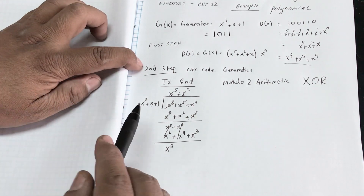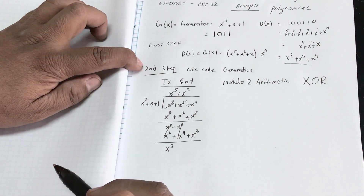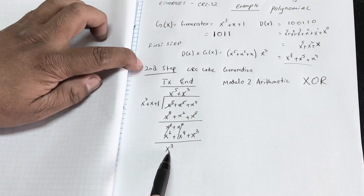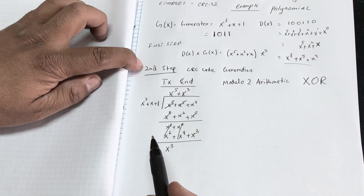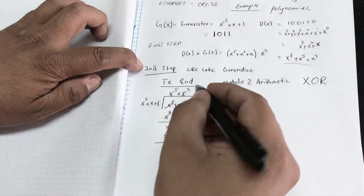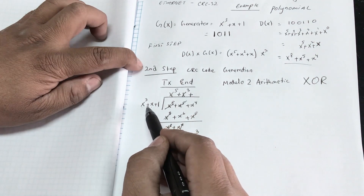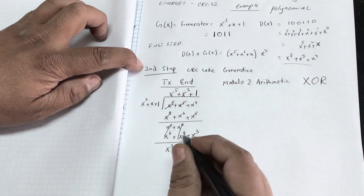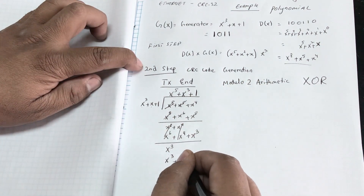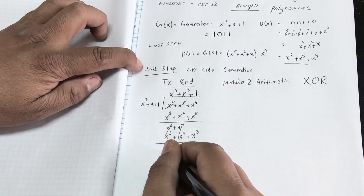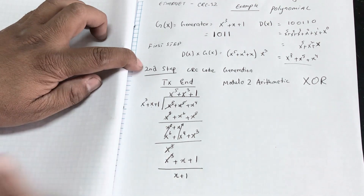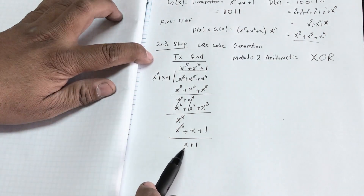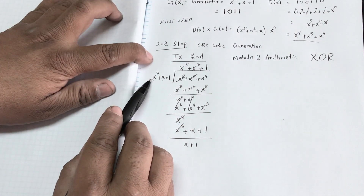We continue long division until the remainder has a degree smaller than the generator's degree (x³). To eliminate x³, multiply the generator by 1: x³ + x + 1. XOR-ing x³ with x³ + x + 1 cancels the x³ terms, and we stop. The remainder is x + 1, which has degree lower than x³.